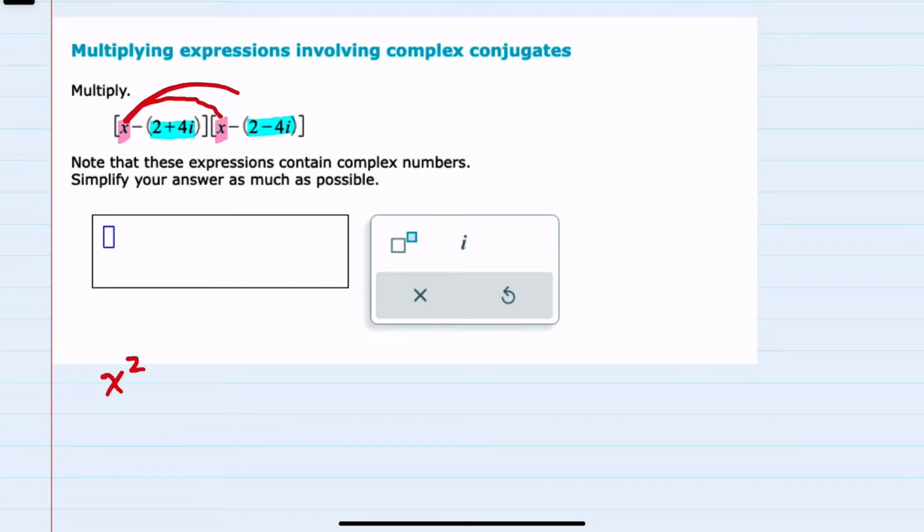And then I would also need to multiply the x times that complex number. Notice that there is a negative in front of that complex number. So I'm just going to write this as a negative x times 2 minus 4i.